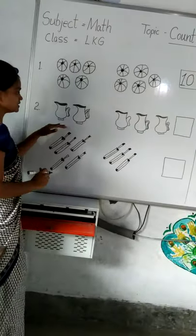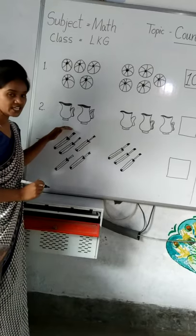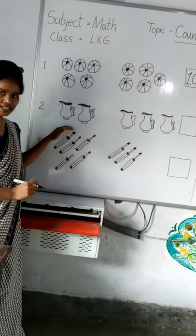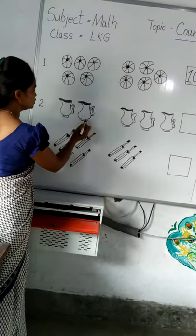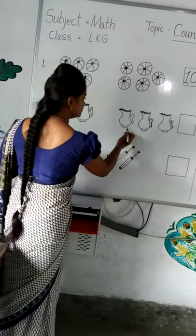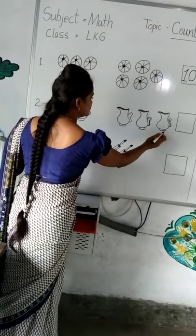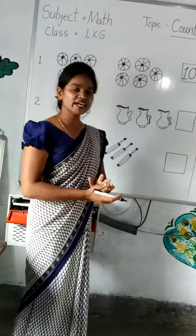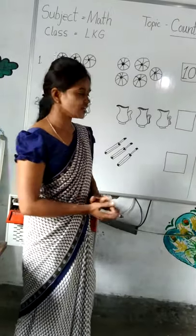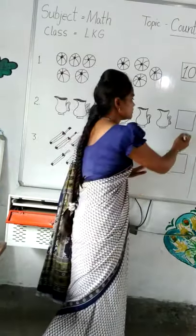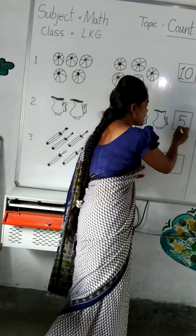Come to this picture. We can count how many jets are there. 1, 2, 3, 4, 5. How many jets are there? There are 5 jets. We can write in the box. 5.